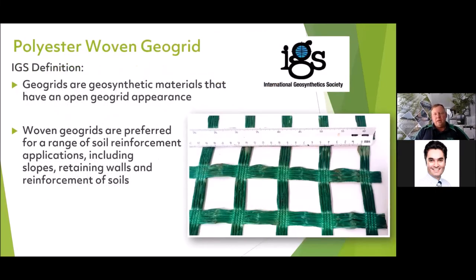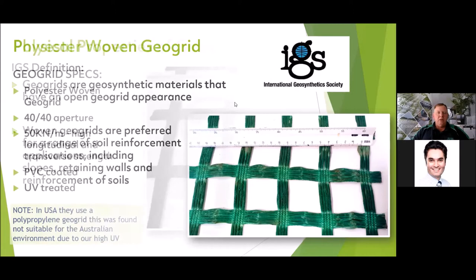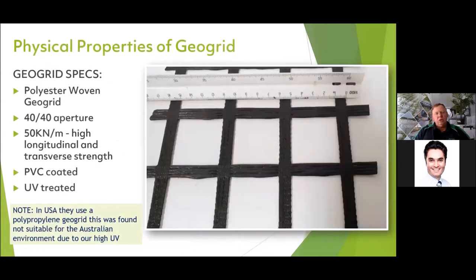The individual components of the geogrid work in synergy to produce a product that's very conducive to the Australian environment. The IGS definition: geogrids are geosynthetic materials with an open grid appearance. Woven geogrids are preferred for soil reinforcement applications including slopes, retaining walls, and reinforcement of soils. We use the geogrid as a base to connect the concrete shapes together, embedding the concrete into the geogrid by about 15mm, making the geogrid an integral structural part.